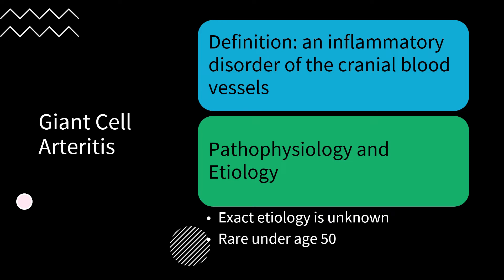Giant cell arteritis, sometimes called temporal arteritis, is an inflammatory disorder of the cranial blood vessels, especially the temporal artery. Common clinical symptoms include headache, inflammation in larger arteries causing pain and stiffness in the back, shoulder, or neck, polymyalgia rheumatica, malaise, jaw pain, and ophthalmic symptoms. Clinical signs include temporal artery and scalp tenderness, fever, and loss of vision.